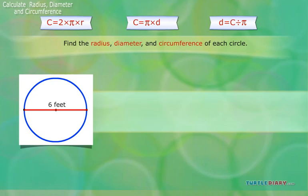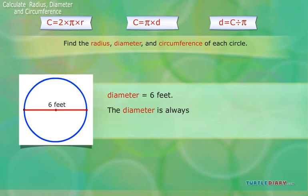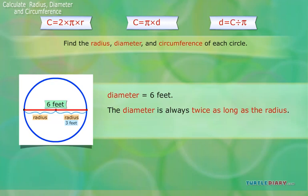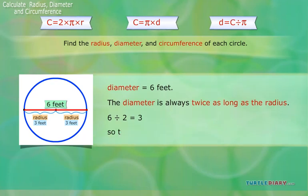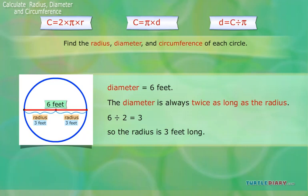Example 2: We can tell from the picture that the diameter equals 6 feet. Remember, the diameter goes all the way across the circle through the center point. The diameter is always twice as long as the radius. So, if our diameter is 6 feet, the radius must be half as long as that. 6 divided by 2 equals 3, so the radius is 3 feet long. If halfway across the circle is 3 feet, it makes sense that the whole way across is 6 feet.